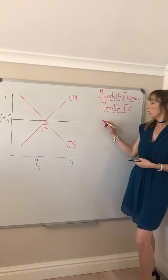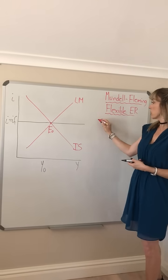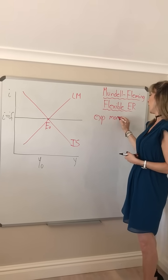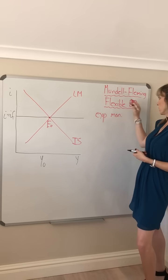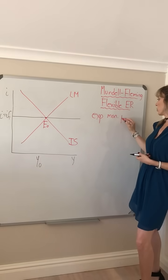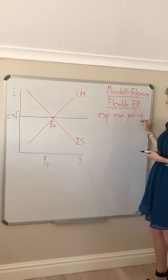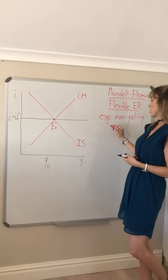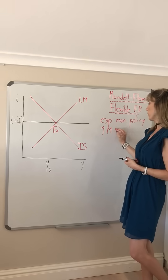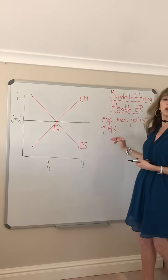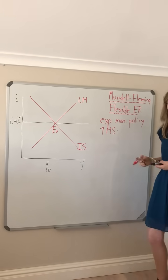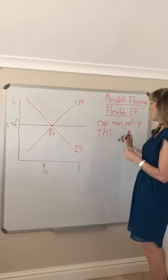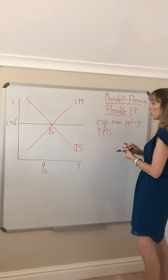The last thing we want to look at is the effect of an expansionary monetary policy under a flexible exchange rate system. What's that going to do? Say for instance you've got an increase in the money supply due to an open market operation, and that's going to shift your LM curve to the right.